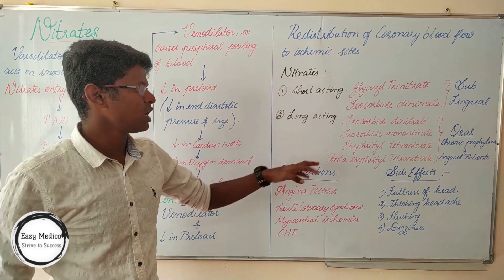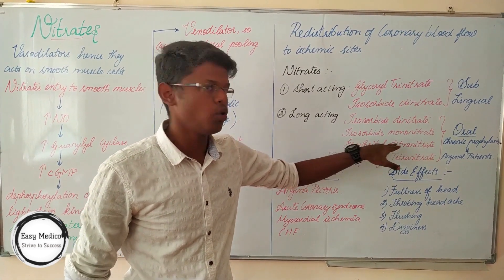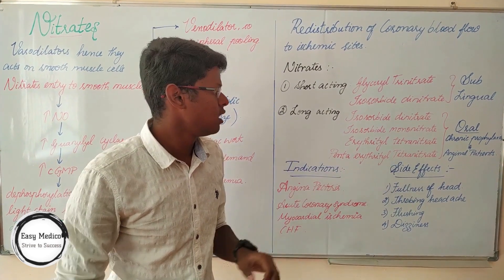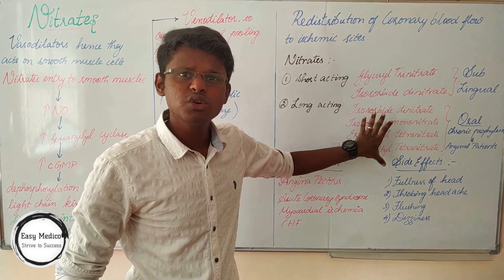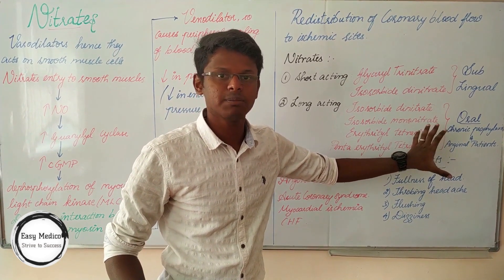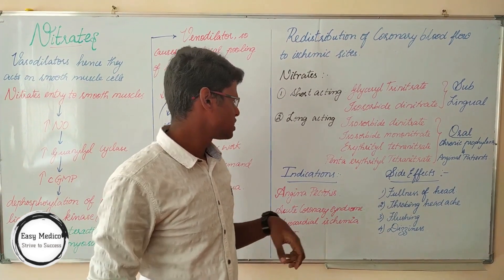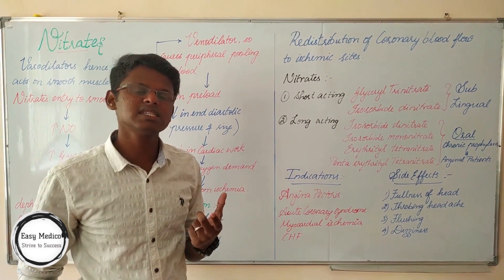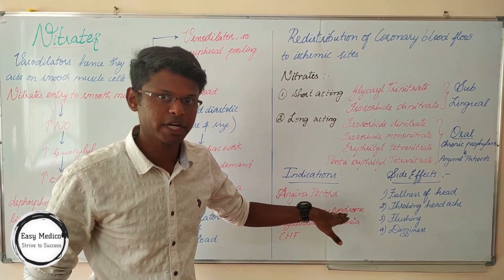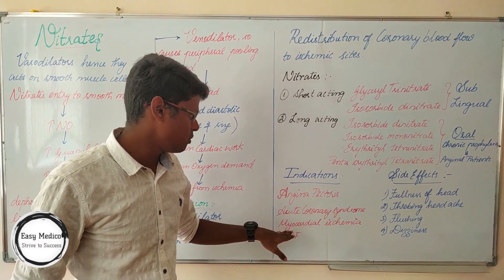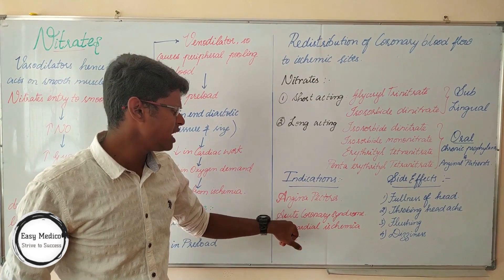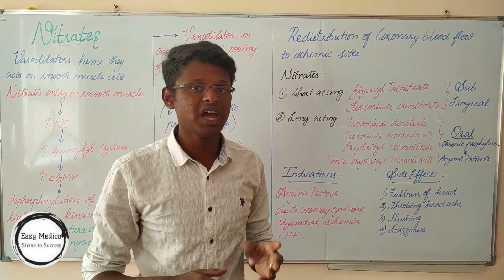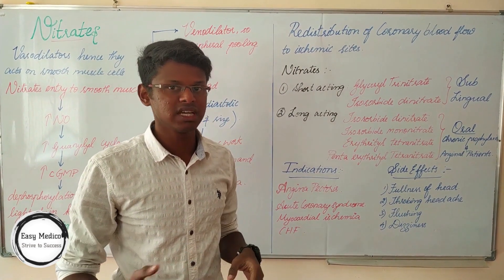Long-acting nitrates include isosorbide dinitrate, isosorbide mononitrate, erythrityl tetranitrate, and pentaerythrityl tetranitrate. These are oral drugs mainly used in cases like chronic prophylaxis and angina pectoris. The indications for nitrates include angina pectoris, acute coronary syndrome, myocardial ischemia, and congestive heart failure. In acute coronary syndrome, glyceryl trinitrate is usually given as three tablets initially. If their action is insufficient, they are then given intravenously.